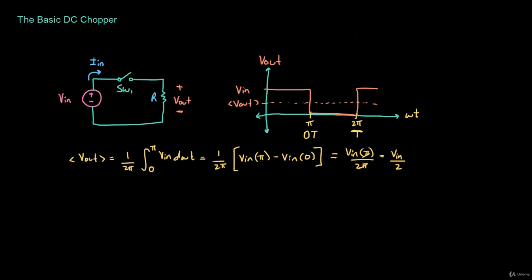In this case, d is what's called the duty ratio — a term we're going to use frequently in DC-to-DC converter analysis. It is the ratio during which, every period, the switch is on. For this example, since we turn the switch on for half of the cycle and off for the other half, d would be equal to 0.5. In more general terms, the average of the output voltage for this basic DC chopper is going to be equal to d times Vn.